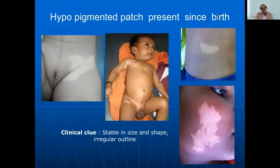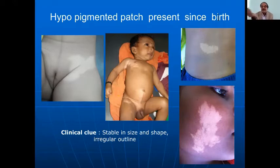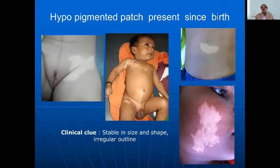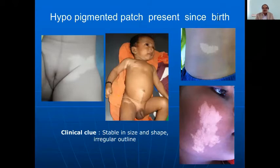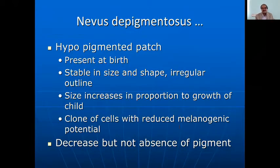Sometimes you may find a child with hypopigmented patches present since birth. What you have to look at is the outline — they are all irregular, unlike the convex border seen in vitiligo. They will be stable in size and safe, but parents may say they are becoming bigger. This is just proportional growth — they are called nevus depigmentosus.